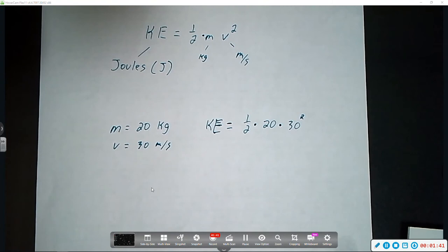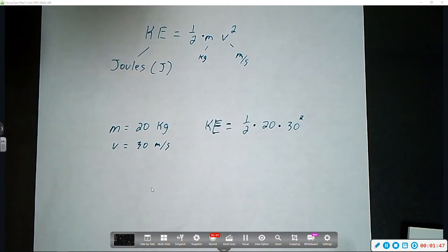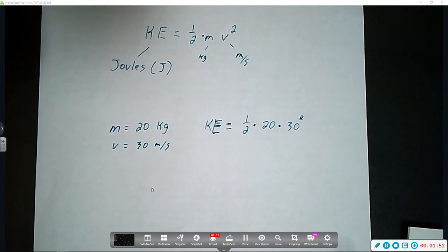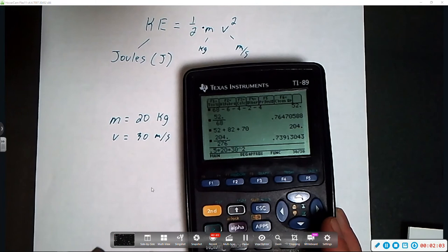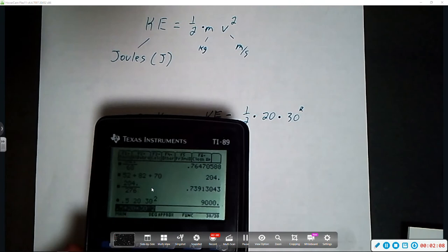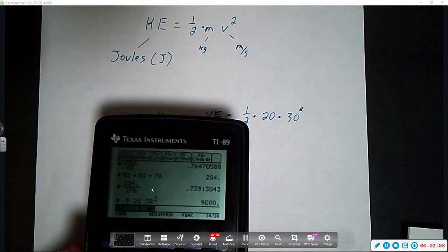Now, remember your order of operations rules from math class. The squared is only attached to the velocity, so that is the only thing that is going to be squared. So in our example, it would be 30. So when we type that into our calculator, we would say times 30 squared. So you see 0.5, 1 half, times the mass, 20, times 30 squared. And our answer is going to be 9,000.